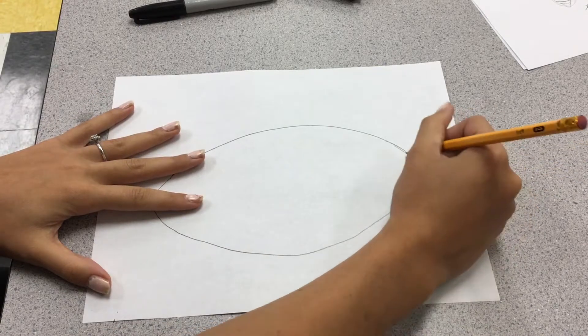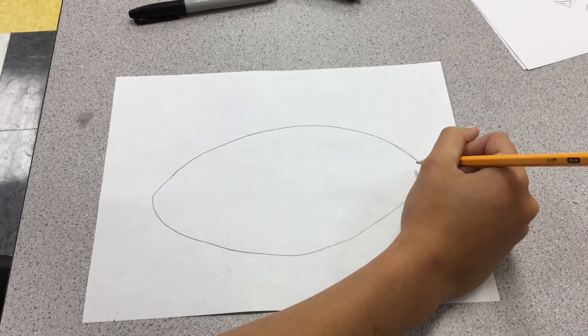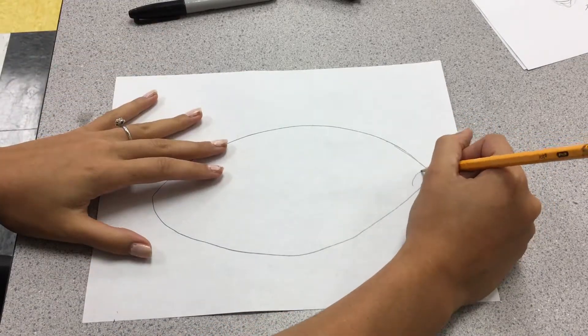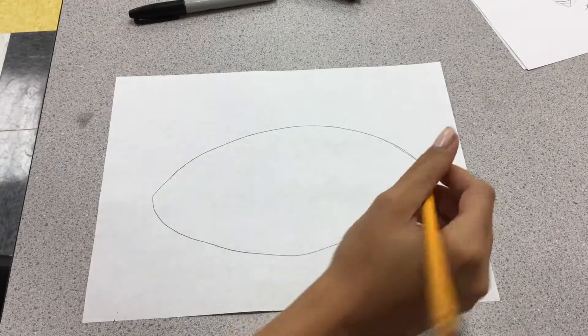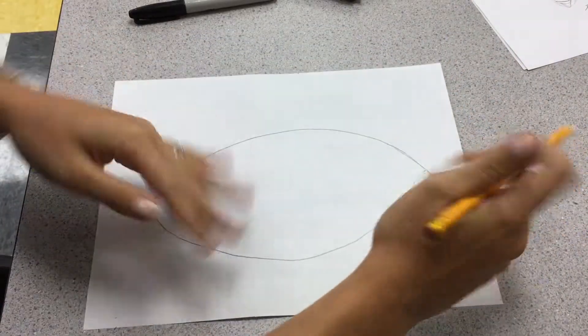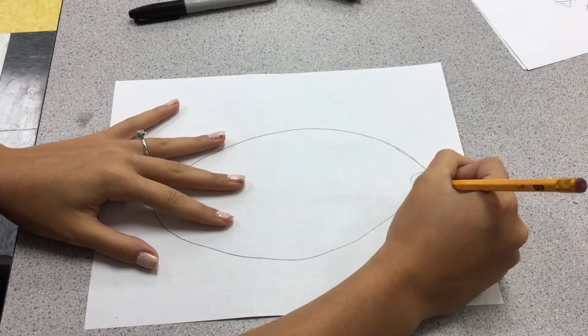So we're going to pretend like this side is our tear duct. So if you look at your partner or your neighbor or something, you can see that you have a little tear duct. Here actually, let me change that. And your eye.